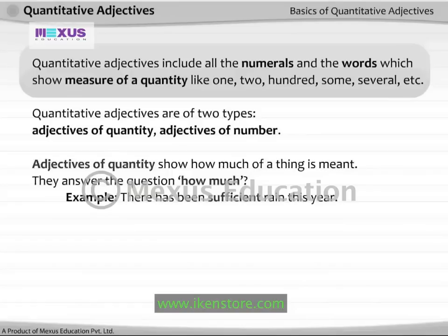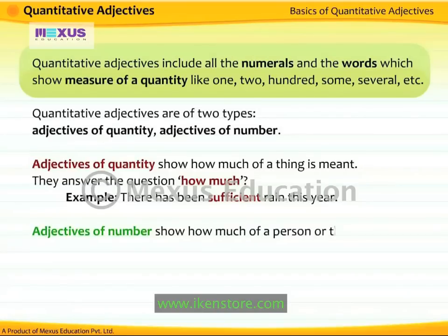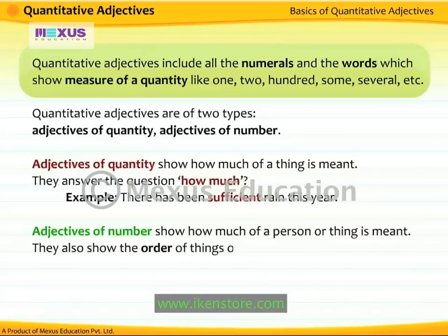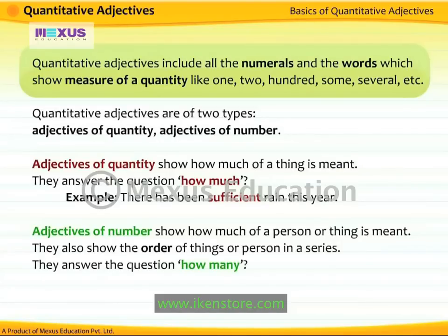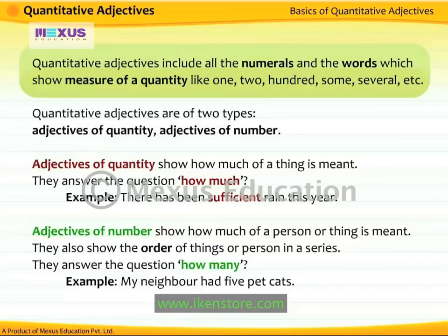Adjectives of number show how much of a person or thing is meant. They also show the order of things or persons in a series, and they answer the question 'How many?' For example: 'My neighbor had five pet cats.' The adjective of number 'five' answers the question 'How many cats?' — that is, the number of cats my neighbor had.